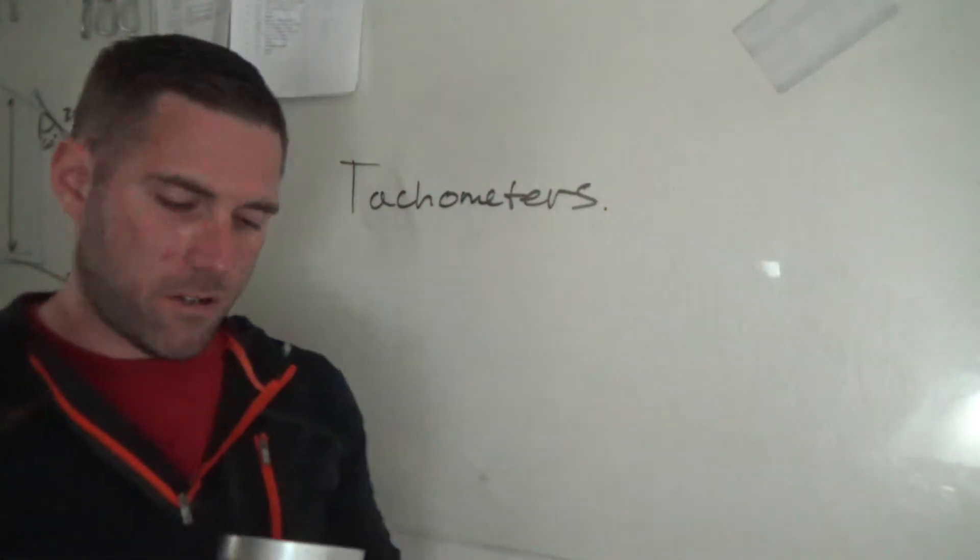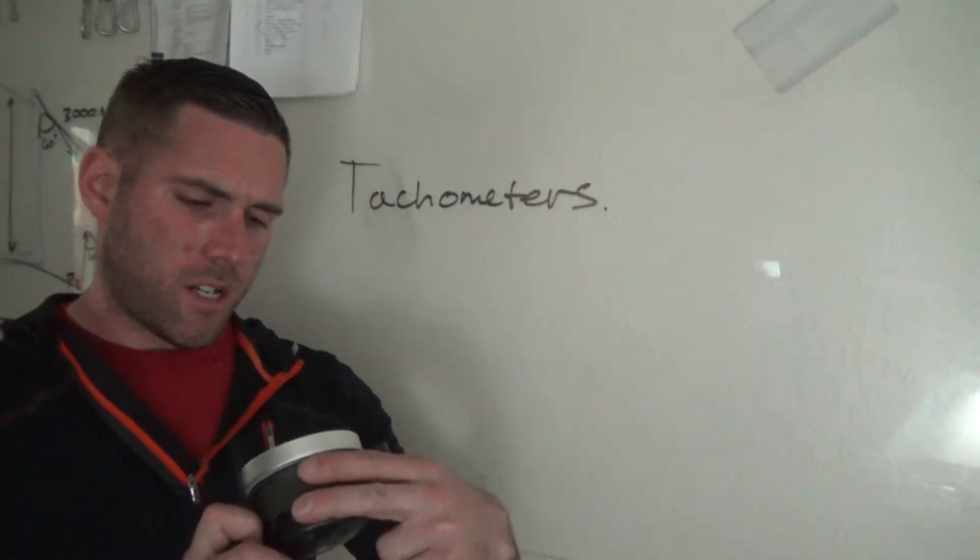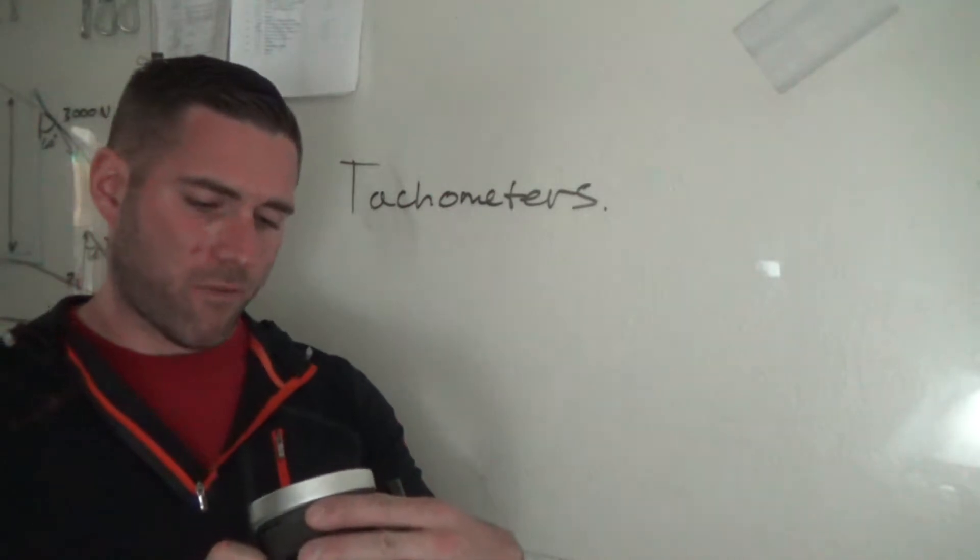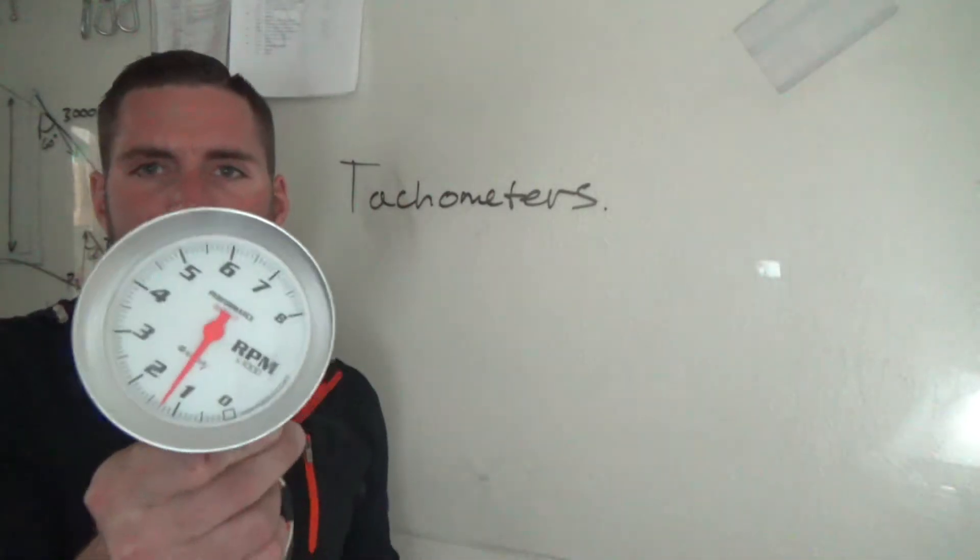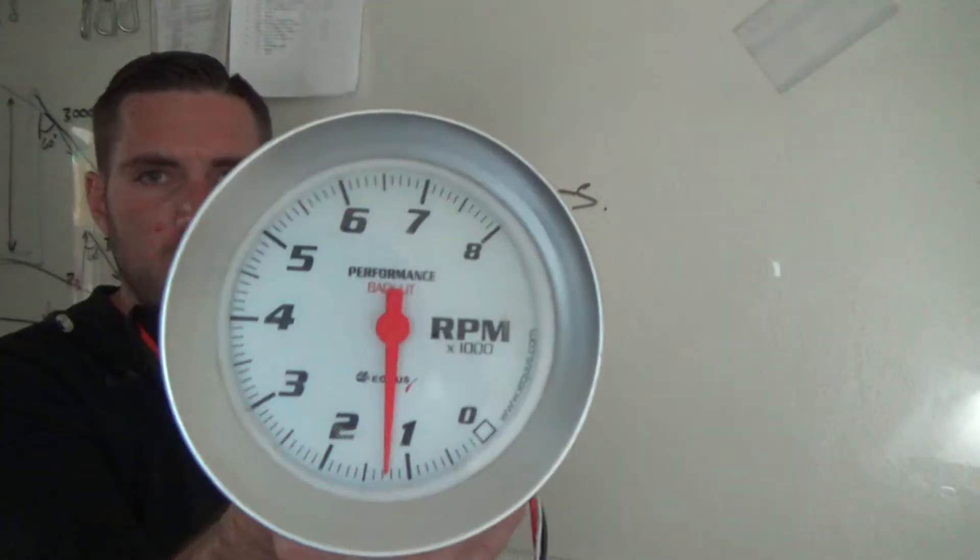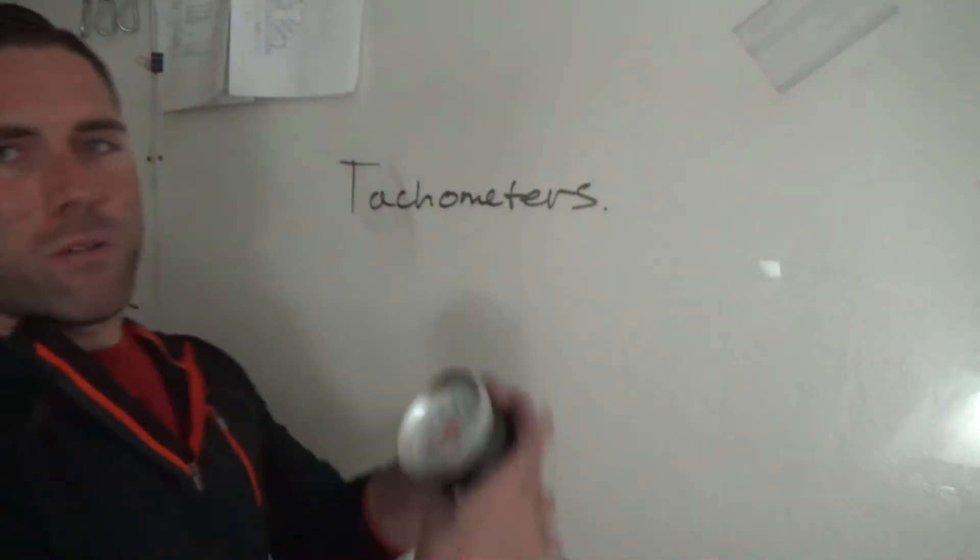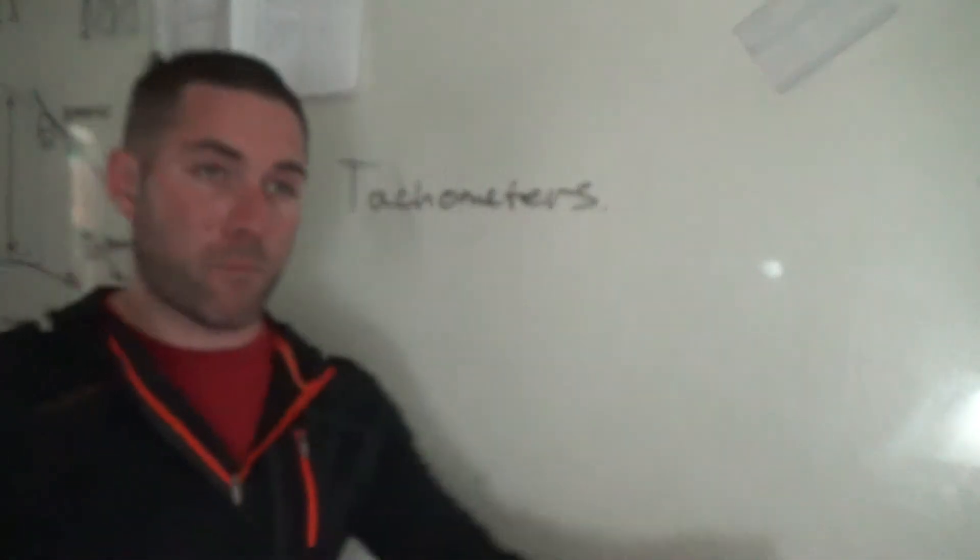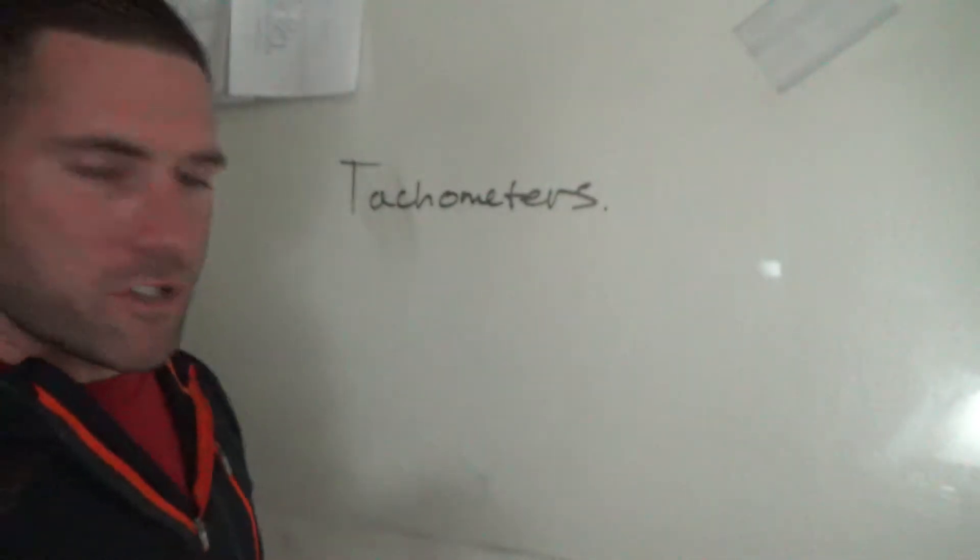The gauge I got here today is an Equus backlit performance one. It's just a basic tachometer. You've seen these things all the time, people are mounting them on the dash, six and a quarter inch. The bigger the gauge, more horsepower, right? Bullshit.